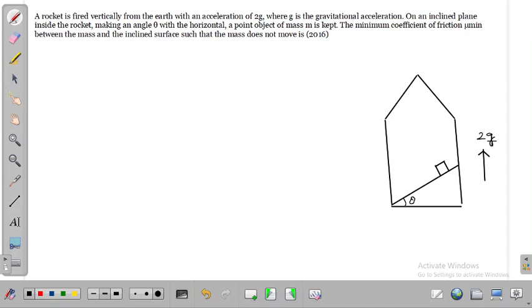The question is: a rocket is fired vertically from the earth with an acceleration equal to 2g. On an inclined plane inside the rocket making an angle theta, a point object of mass m is kept.